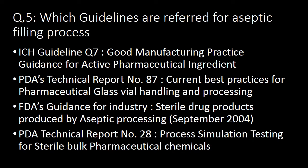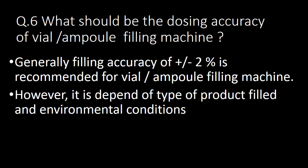Next question: which guidelines are referred to for the aseptic filling process? The most commonly referred guidelines are: first, ICH guideline Q7 — Good Manufacturing Practice guidance for active pharmaceutical ingredients; second, PDA technical report number 87 — current best practices for pharmaceutical glass vial handling and processing; third, FDA guidance for industry — sterile drug products produced by aseptic processing, September 2004; fourth, PDA technical report number 28 — process simulation testing for sterile bulk pharmaceutical chemicals.